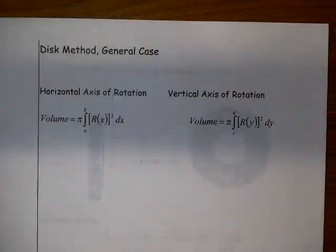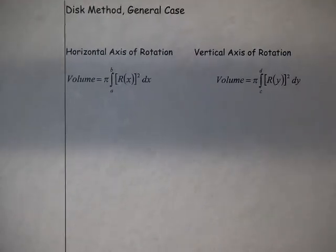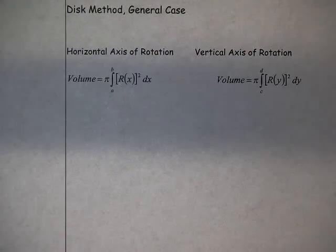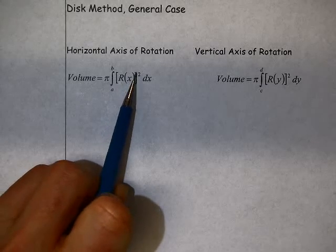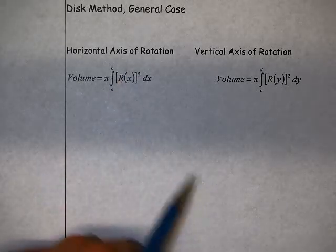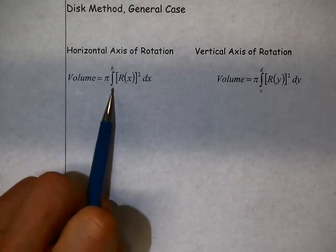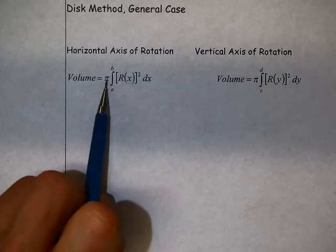So in general, this is the approach we're going to take. We have, for a horizontal axis of rotation, so that means we're rotating about either the x-axis or a y equals some constant axis, it's going to be the radius squared is our integrand. So we're going to have pi times the integral from a to b of the radius squared dx. You can see there's the pi r squared.